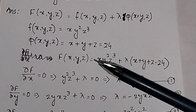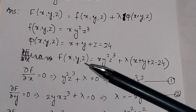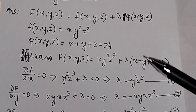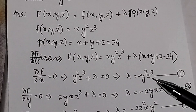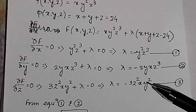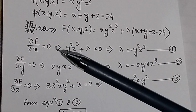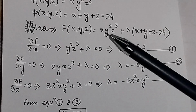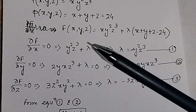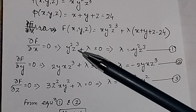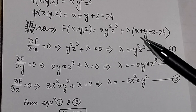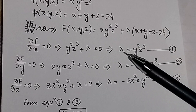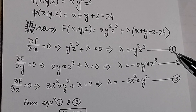Writing the Lagrange equation: F = x·y²·z³ + λ·(x + y + z − 24). To find the maximization or minimization condition, we take partial derivatives and set them to zero. Taking the partial derivative with respect to x: y²·z³ + λ = 0, so λ = −y²·z³. Call this equation number 1.